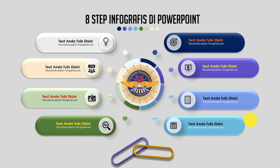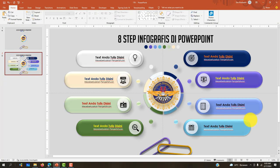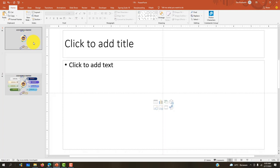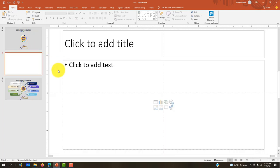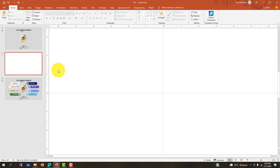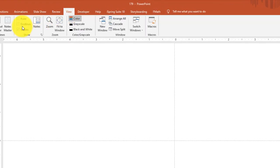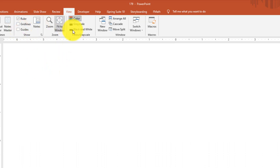Yang pertama, kita keluar dulu dari tampilan slide show dengan menekan Escape. Kemudian di slide 1, kita tekan Enter. Kemudian kita Ctrl+A, kemudian kita tekan Delete. Di sini kita bisa menampilkan guideline yang bisa kita munculkan dan hilangkan di menu View, kemudian pilih Guide untuk memunculkan dan menghilangkannya.